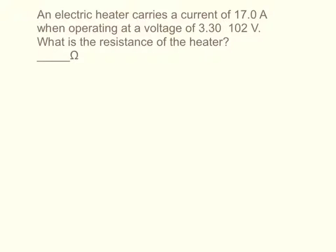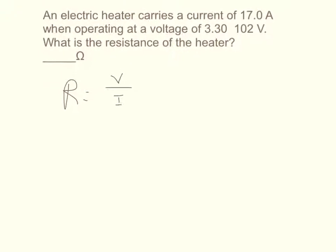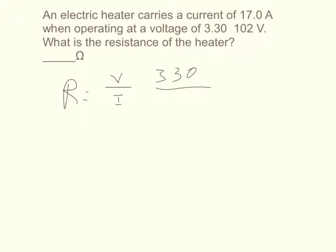The resistance is equal to voltage divided by current. You have everything you need - just plug in your voltage, which is 330, and your current, which is 17 amps.